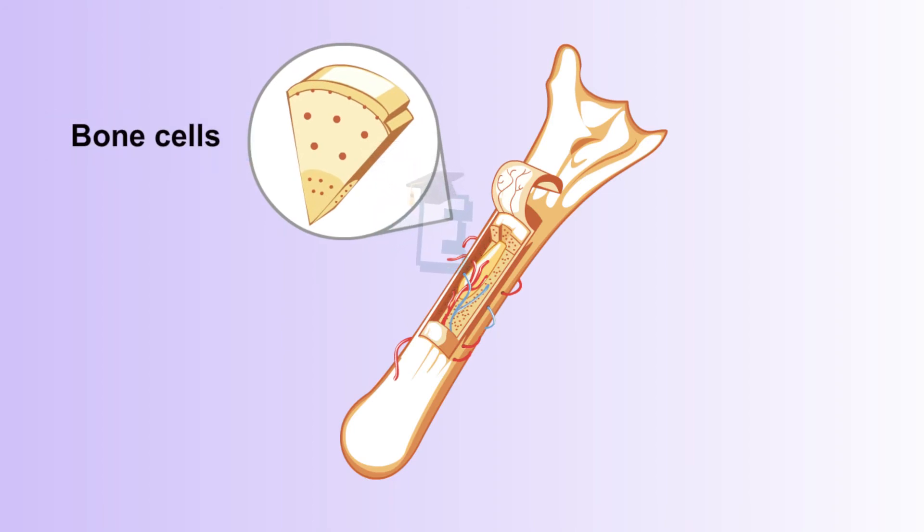The function of the other bone cell, called osteoclast, is to break down the bone tissue and release the calcium and phosphorus when needed by the other body systems.